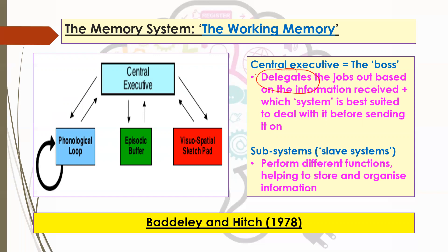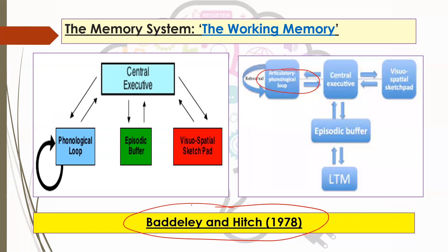So the slave systems perform different functions, operate in slightly different ways, and help to store and organise that information. They don't all do the same thing — each has a different speciality. Once they've dealt with the information, it's returned to the central executive, who then decides the next stage. This model was put together by two scientists called Baddeley and Hitch — their names may come up in the exam, so you need to be thinking 'Baddeley and Hitch working memory model.'